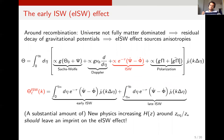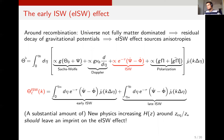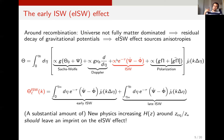I'll discuss one such test based on the early ISW effect. It's useful to think about the usual line-of-sight approach to CMB perturbations. I can decompose the temperature anisotropy field into various source terms: the Sachs-Wolfe term, which is the relative red-shifting or blue-shifting of photons on the last scattering surface; a velocity Doppler term; a polarization term; and what's going to be of interest to us is the integrated Sachs-Wolfe term.